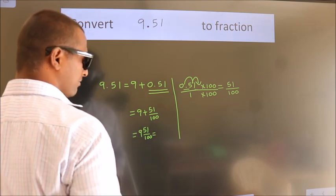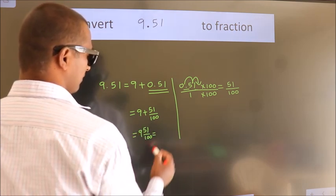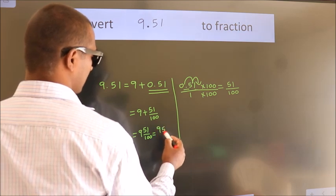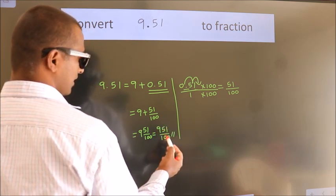And in improper fraction it is 9 into 100, 900 plus 51. 951 by 100 is our fraction.